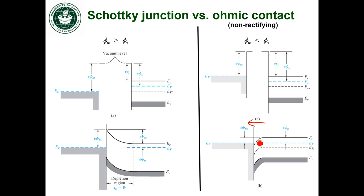And I have a relatively small barrier, so there is still a potential barrier here. But it's a much smaller barrier than in the Schottky junction case for electrons moving from the metal to the semiconductor.